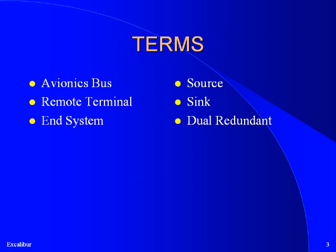It's worthwhile to learn some of the language of avionics buses before diving into the details of the specifications, as sometimes different buses use different terms to describe the same thing. An avionics bus is a means for communicating between different parts of an airplane. A remote terminal or end system is a part of an airplane that needs to send or receive information to or from another part of the airplane. A source is a remote terminal with data to transmit. A sink is a remote terminal that needs to receive data. Dual redundancy is the use of backup systems so that if part of the communication system fails, the data will get through via the backup route.